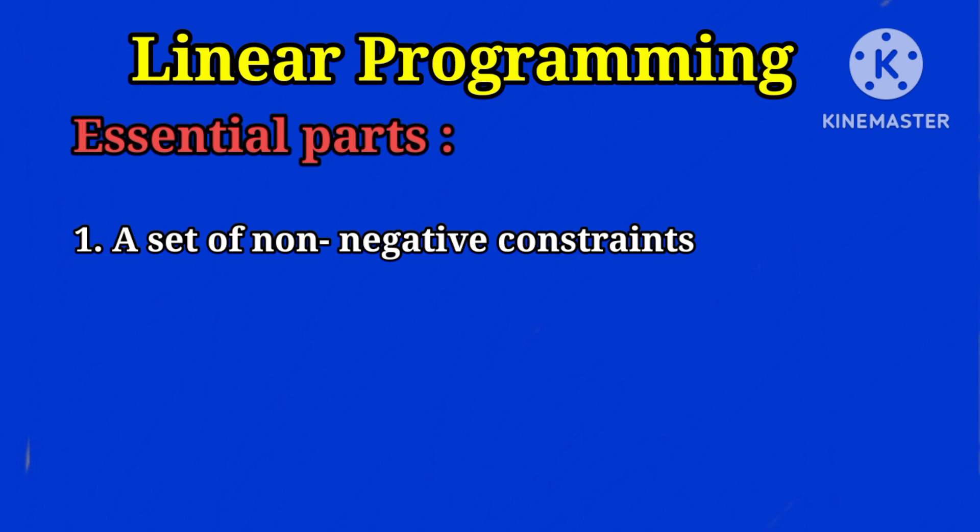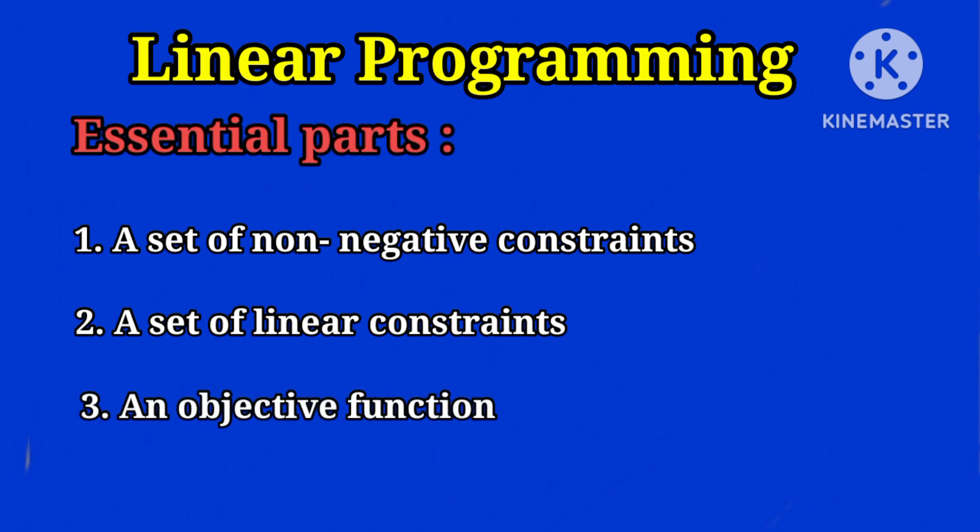Next, a set of linear constraints representing the limitations and extensions of the factors available. And number three, an objective function should be there to be optimized subject to the above constraints.